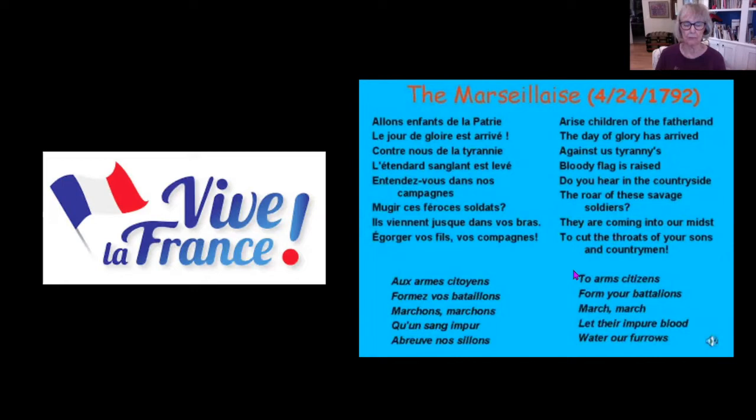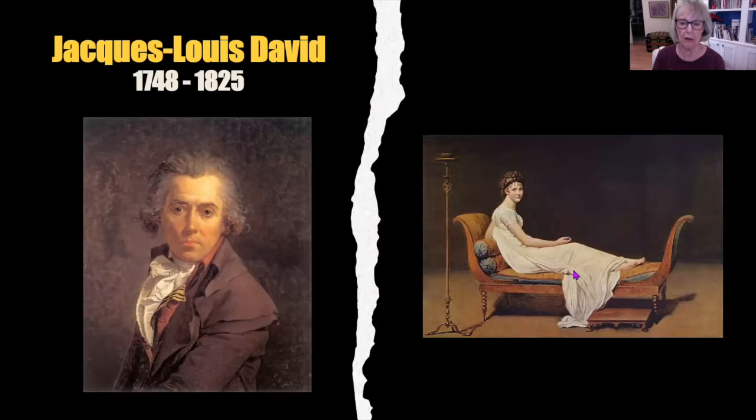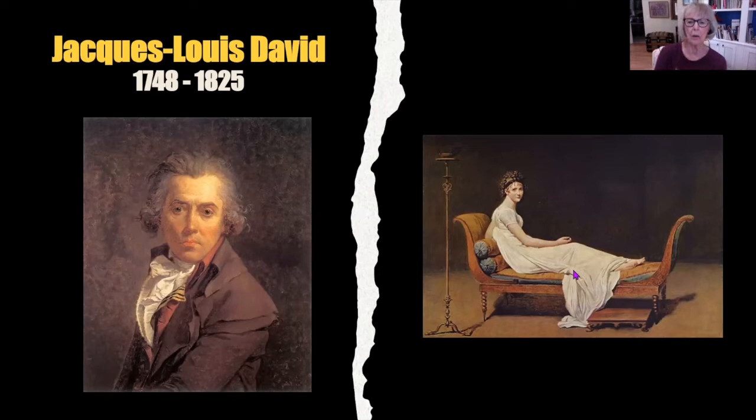The first painter we're going to look at is one we looked at last week. The cursor is on Madame Récamier, the portrait that David did. This was a neoclassical portrait - her reclining, sweet, looking at us. Neoclassical, calm. Let's look at David's most famous painting from the French Revolution.